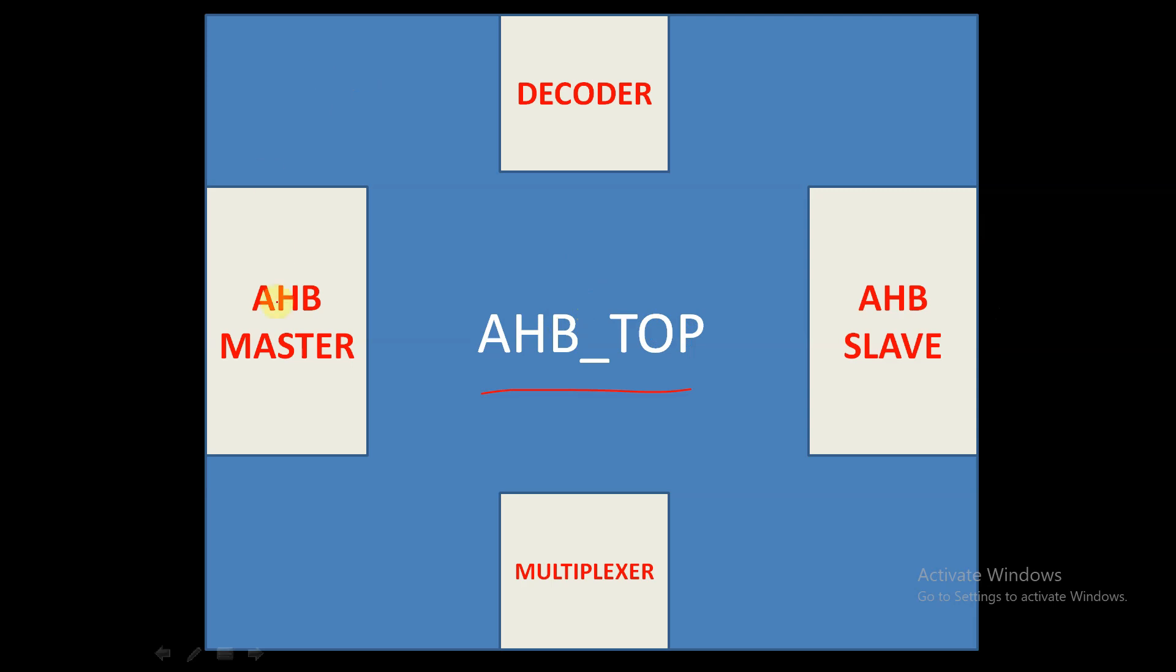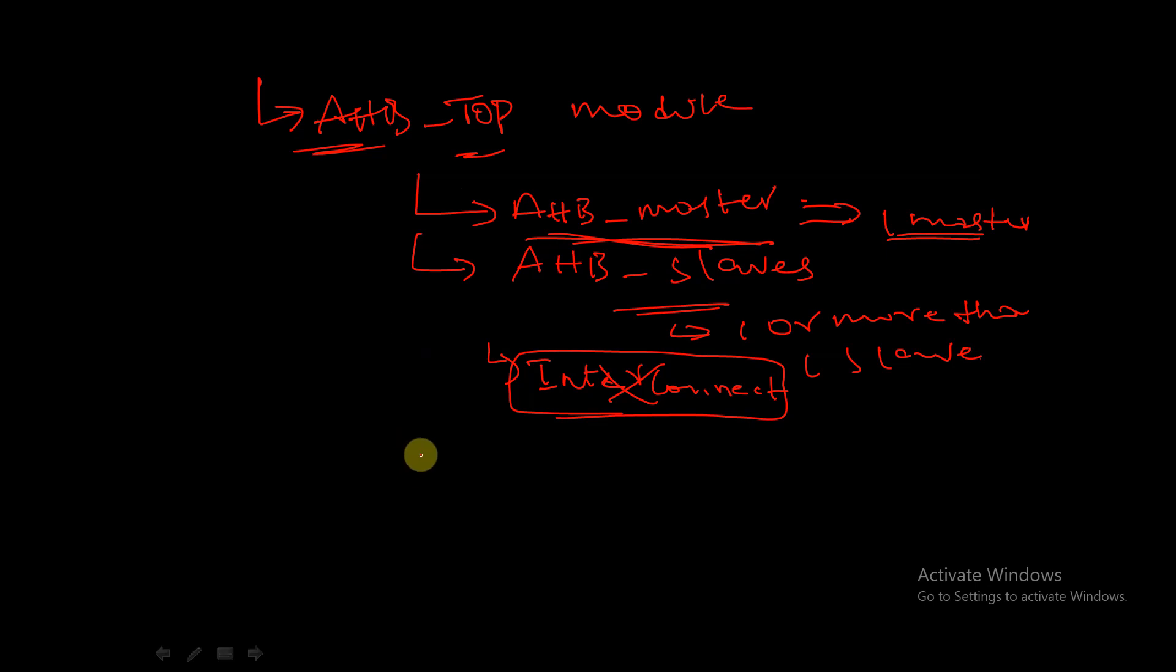This AHB top module consists of a single master and one or more slaves. We are going to design a decoder as well as a multiplexer. Decoder and multiplexer are used for address selection of the slaves.